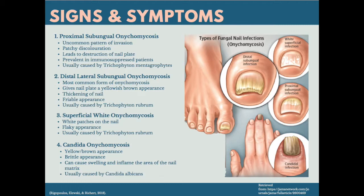Candida onychomycosis usually affects the whole nail. It commonly shows a brownish-yellow colour and has a brittle appearance. This infection can also cause swelling of the posterior nail fold and can inflame the area of the nail matrix. This type is caused by Candida albicans.